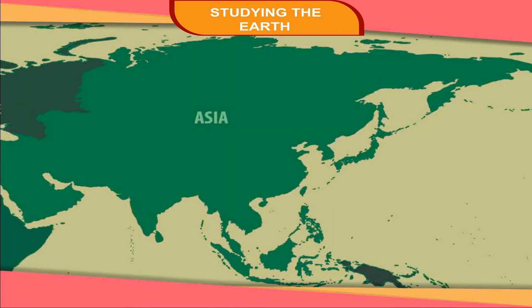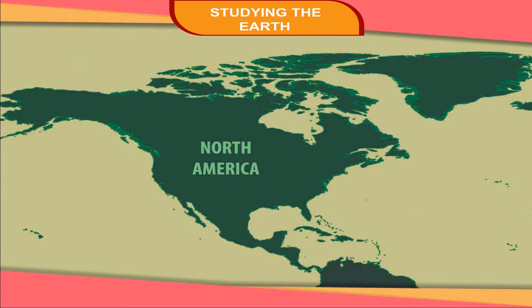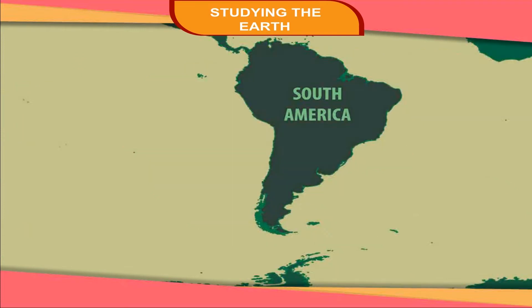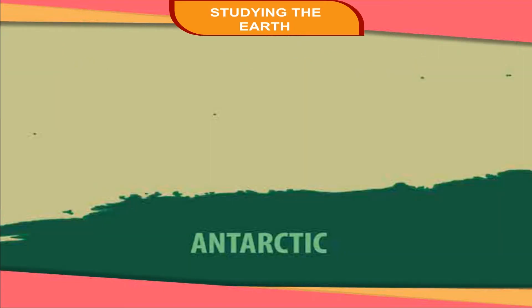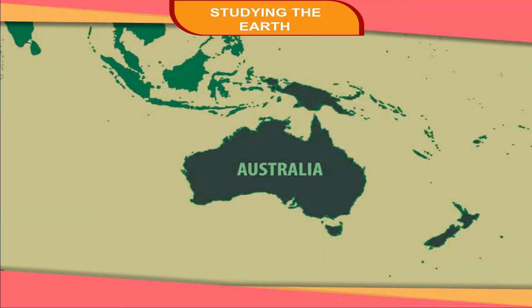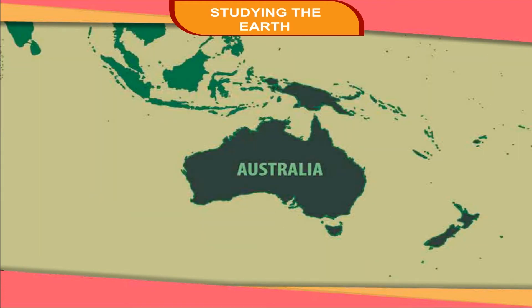1. Asia, 2. Africa, 3. North America, 4. South America, 5. Europe, 6. Antarctica, 7. Australia. Asia is the largest continent and Australia is the smallest continent.